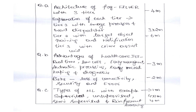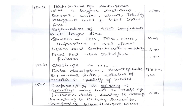For 10A, architecture of AmbiSense: draw the four-layer architecture for two marks, explain in detail for five marks, and explain the communication model and front-end user interface features for three marks. For 10B, challenges in ML: start with why ML is used, then list and explain the types of challenges in detail — this carries five marks.